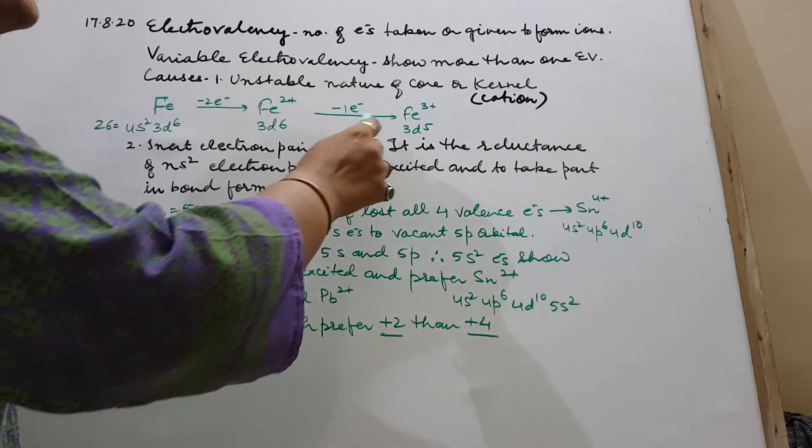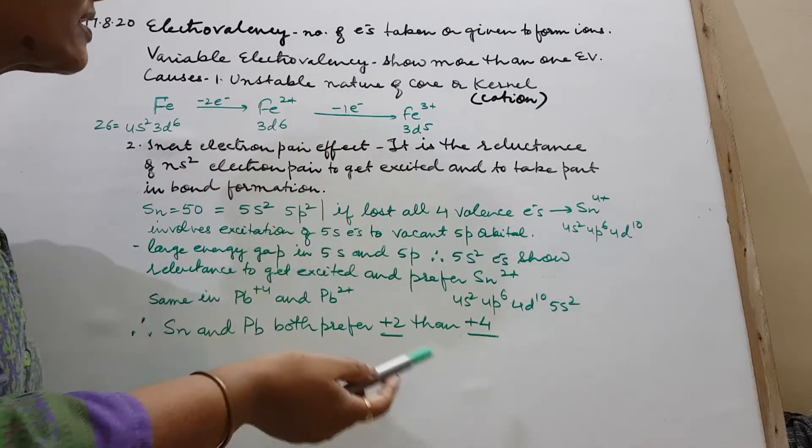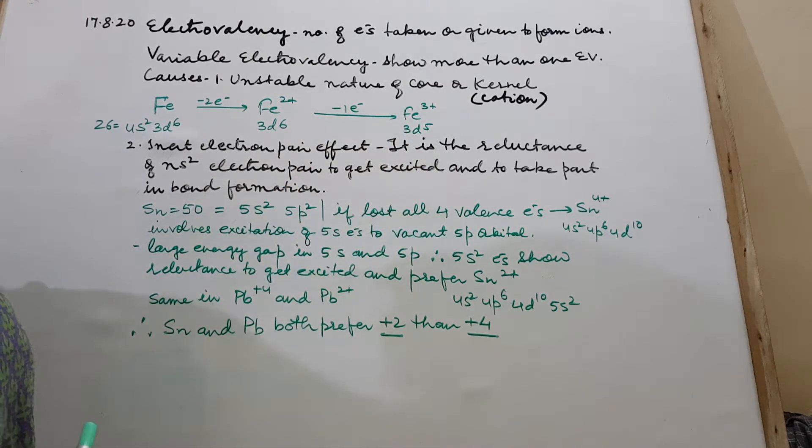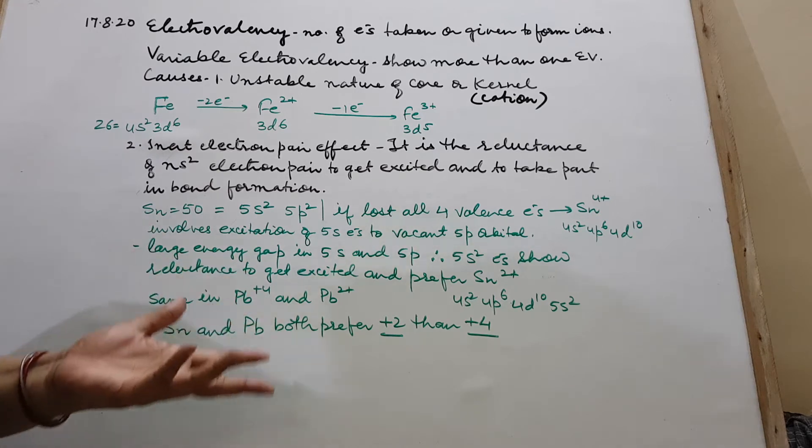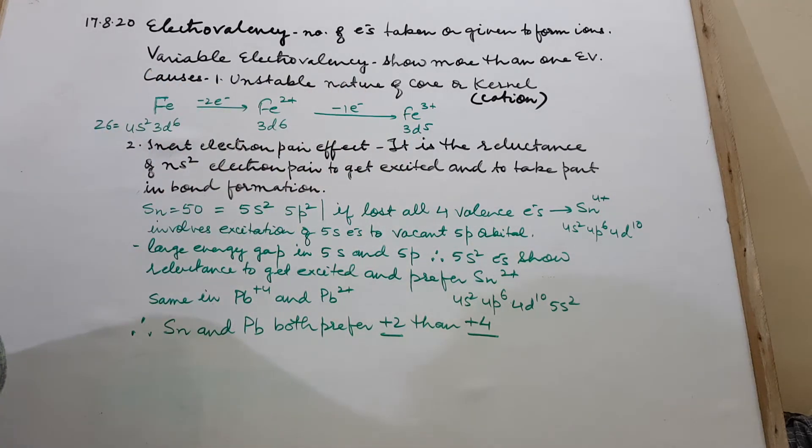Thus we have iron showing two states, ferrous and ferric. We always say that ferric is more stable because here we have the stable configuration of 3d5. So this first cause is unstable nature of core or kernel due to electronic configuration.